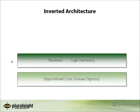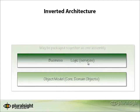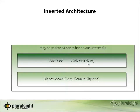We can invert this architecture so that the thing at the bottom of our dependency structure is instead the object model — the core domain objects — as well as our business logic and services. These can be packaged together as a single assembly or separately. It's important to note that any dependencies these have are represented by interfaces at this layer.